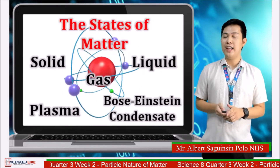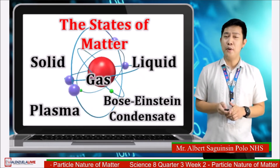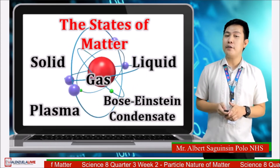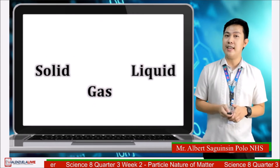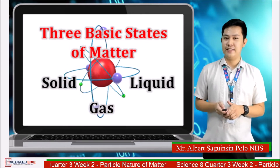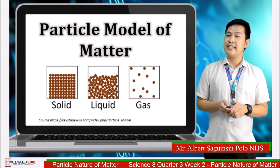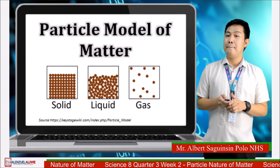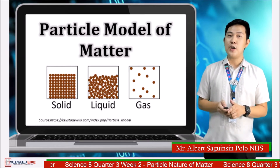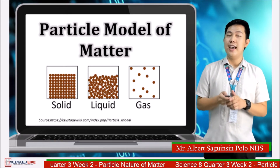The states of matter are solid, liquid, gas, plasma, and Bose-Einstein condensate. In some books you may find more states of matter, but for today we will focus only on the three basic states: solid, liquid, and gas. To understand and describe the particle nature of matter, scientists use the particle model of matter — a theory and illustration that represents the motion and properties of matter with regard to its states.